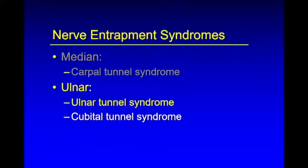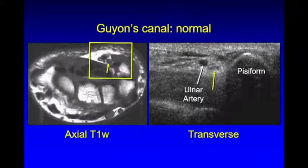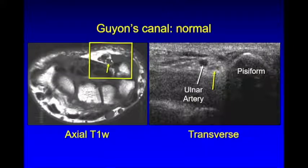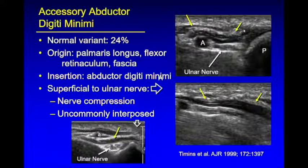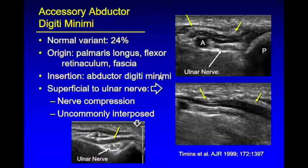Now we'll talk about two entrapment locations for the ulnar nerve. First, ulnar tunnel syndrome. If you identify the pisiform — you can palpate that and see it on ultrasound — the ulnar nerve lies between the pisiform and the ulnar artery, going to Guyon's canal, a site of potential entrapment. One potential cause is an accessory abductor digiti minimi, present in up to 25% of the population, compressing the nerve in this space. In my experience, I see this about 20% of the time but have rarely seen symptoms related to it, though it has been reported.